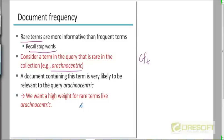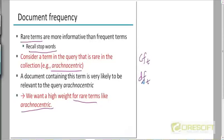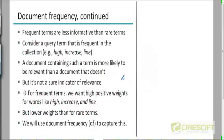How do we give rare terms a higher weight? By incorporating collection frequency, and there was another frequency value we were looking at — the document frequency, which is the number of documents in which a term occurs. How rare or frequent a term is can be defined based on either of these two measures. Both measure how common a particular term is. Frequent terms are less informative than rare terms.